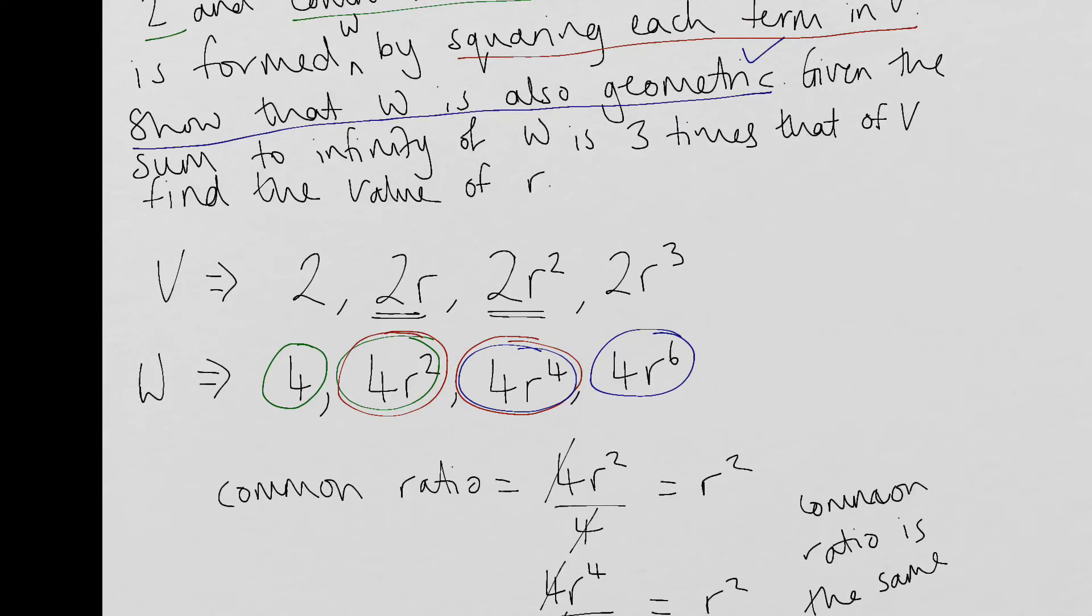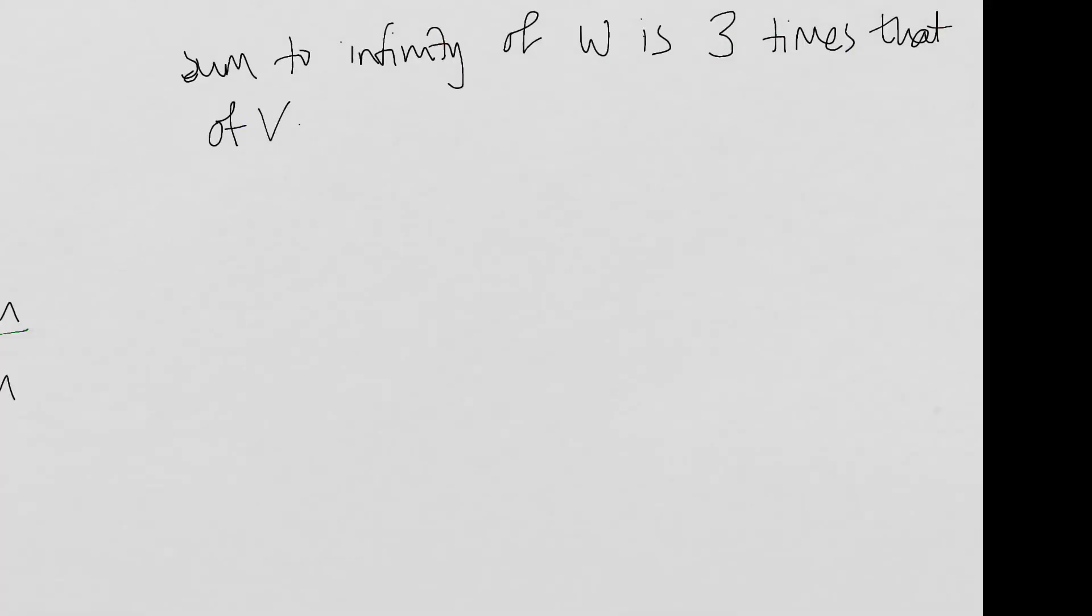Given the sum to infinity of W is three times that of V, find the value of R. OK, so we're going to need to set up an equation for this. So this is what I'd start with writing because what I often find is the mistake with these questions is that people put the three in the wrong place. So the sum to infinity of W is three times that of V. So you need to make sure that this three is with the sum of V. You're multiplying that by three, not the W part.